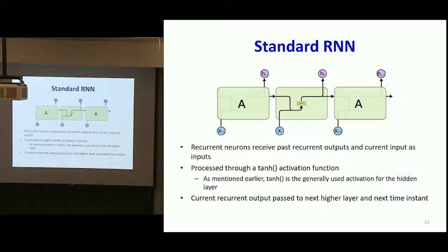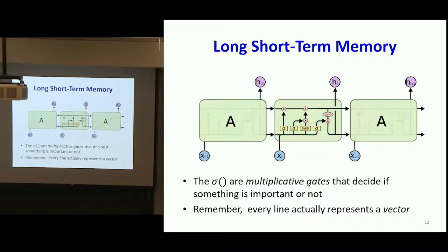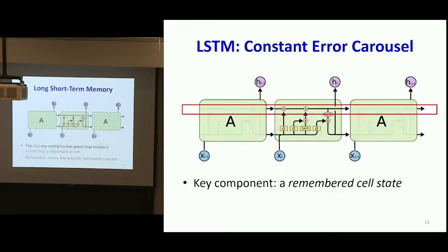Going back to our model: the standard recurrent neural network has no gates. And this was our long short-term memory network. Here we have a bunch of multiplicative gates that decide if something is important or not. Remember that each of these lines — every block you see — is actually representing a vector going into the page, and every arrow represents a full connection from every element in the source to every element in the destination. This guy here was the remembered memory state, the cell state, which did not have any weights and did not have any activations.